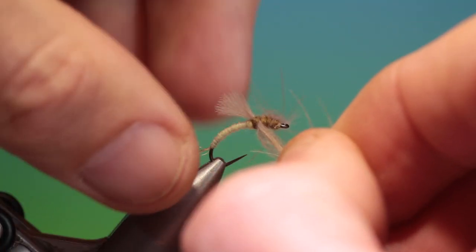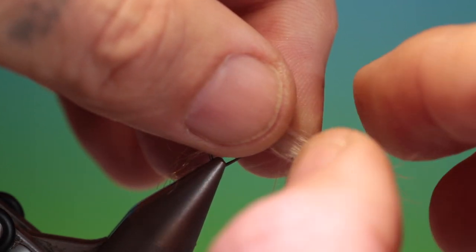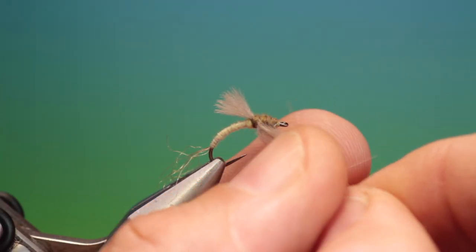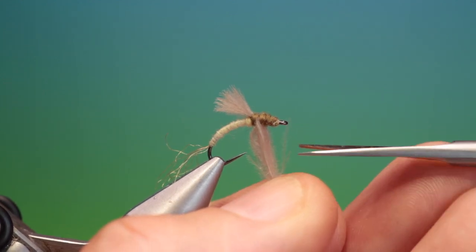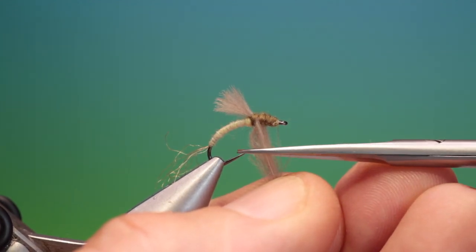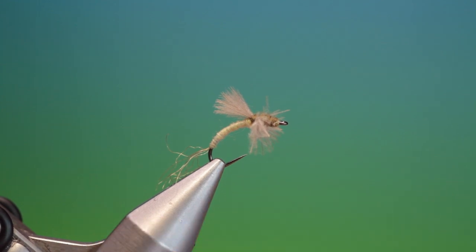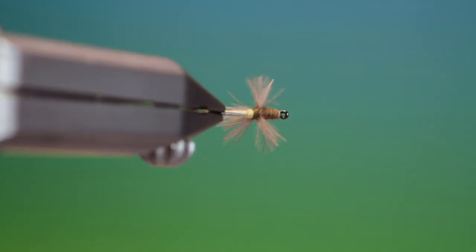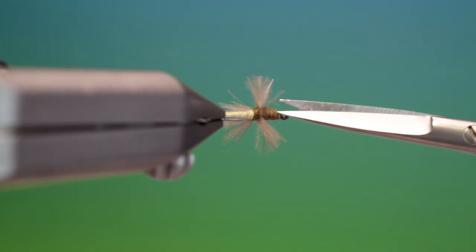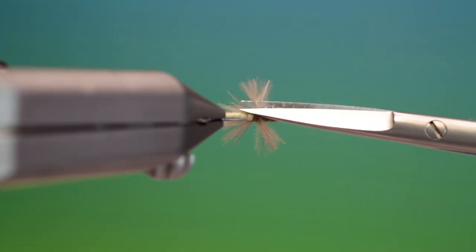Then what we want to do is trim the legs to size. So we take both the hackles, we pull them down like this. We want to trim them off around the hook point. And we've got a little coming down underneath there. Don't want that.